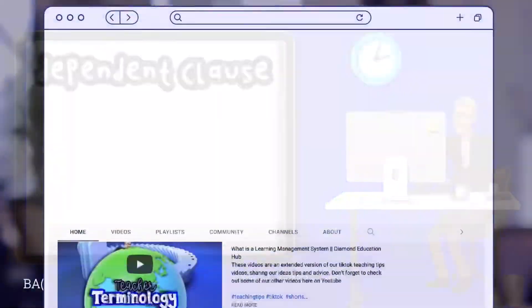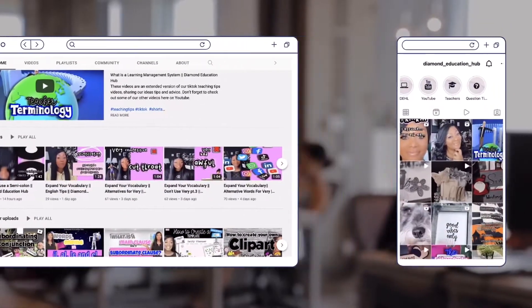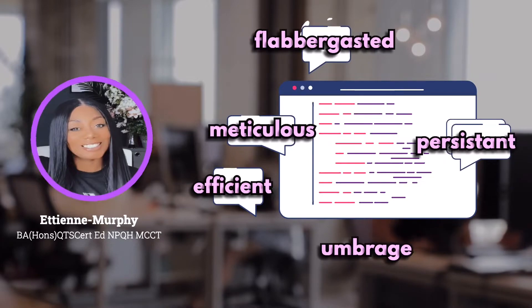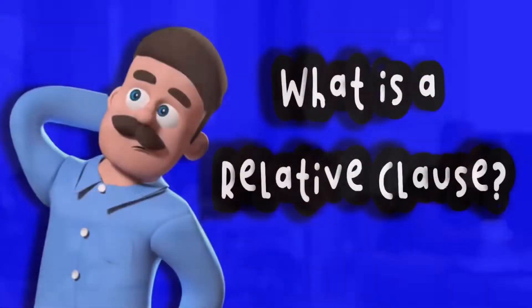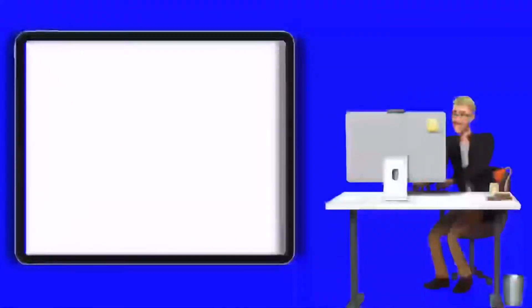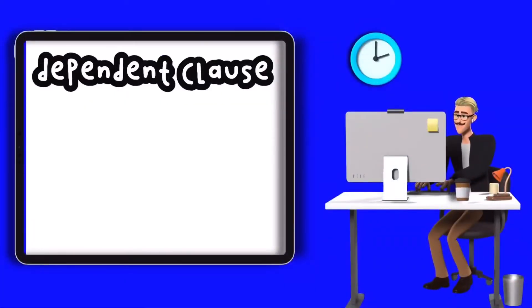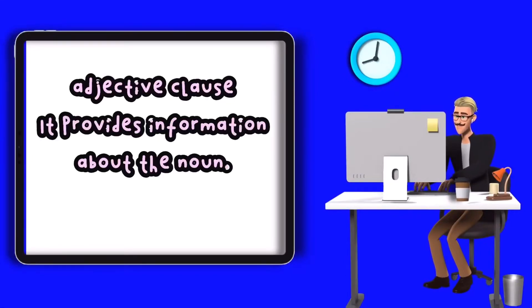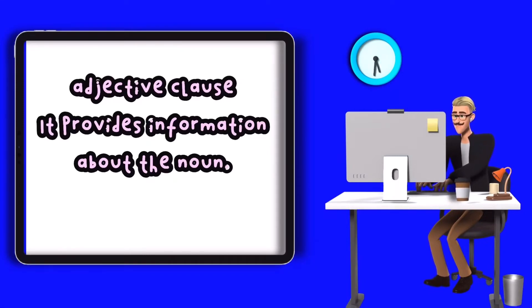What is a relative clause? A relative clause is one kind of dependent clause. It has a subject and verb, but can't stand alone as a sentence. It is sometimes called an adjective clause, because it functions like an adjective — it gives more information about a noun.